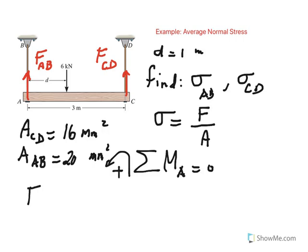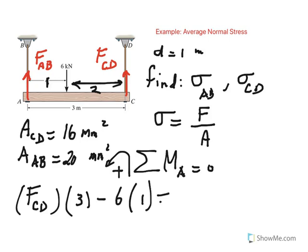So we have the moment of FCD about A would be FCD times 3. Remember D is equal to 1, so this is now 1 meter, and then this is 2 meters then, right? So that moment is positive. Then we have the moment of the 6 kilonewton about A, which would be 6 times 1. So here we go. FCD actually becomes 2 kilonewtons.